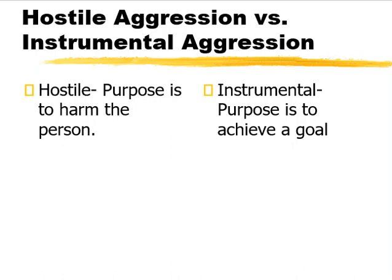We have different types of aggression: hostile aggression, where the purpose is to harm — whether self-defense or initiating violence — and instrumental aggression, where the purpose is to achieve a goal, such as in a sport where acting aggressively is necessary to achieve the constructed objective.